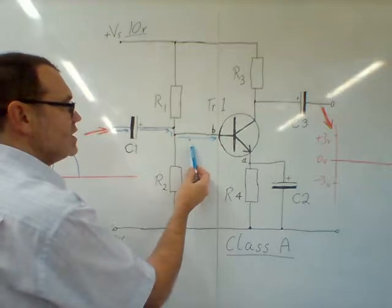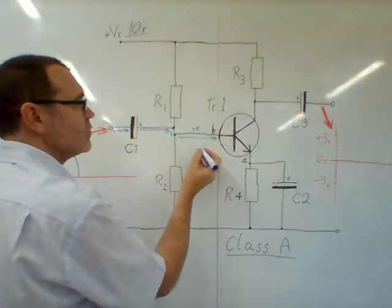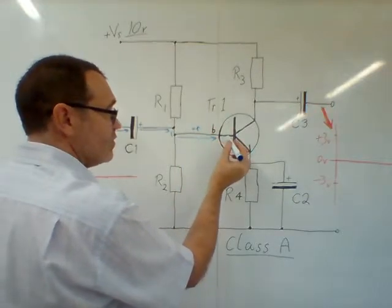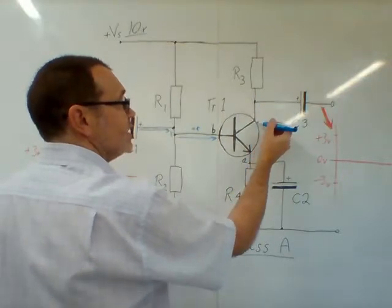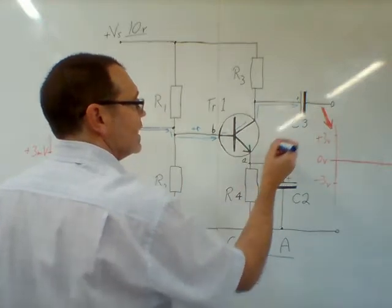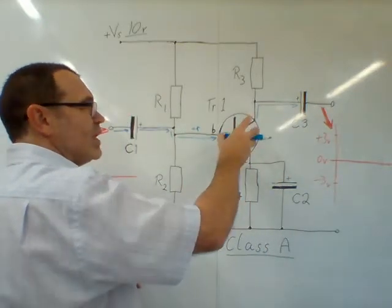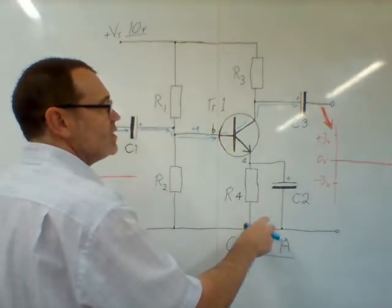This small positive increase will turn the transistor on slightly more, which will increase the current flowing through the base, resulting in a significant increase in current in the collector. Effectively, the signal will be passed through to the collector. If you imagine opening a tap, the resistance between here and here reduces.